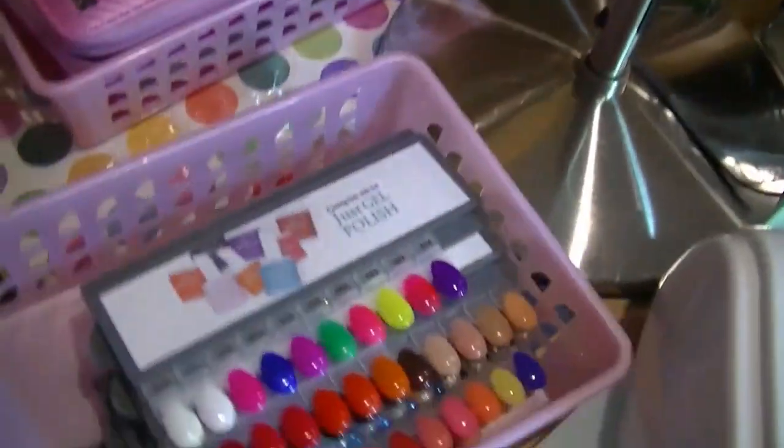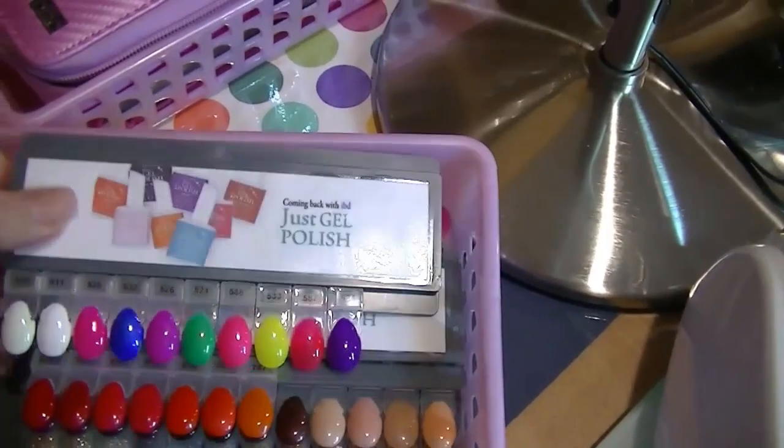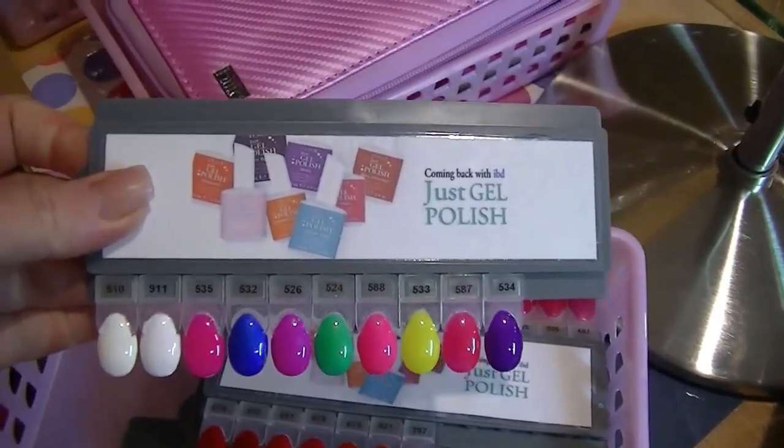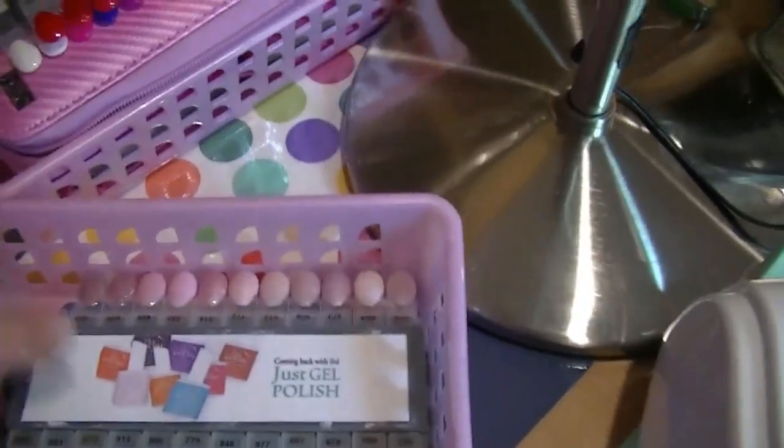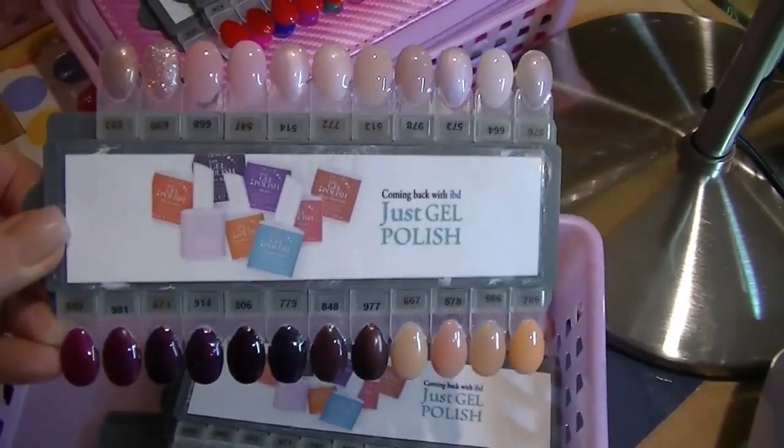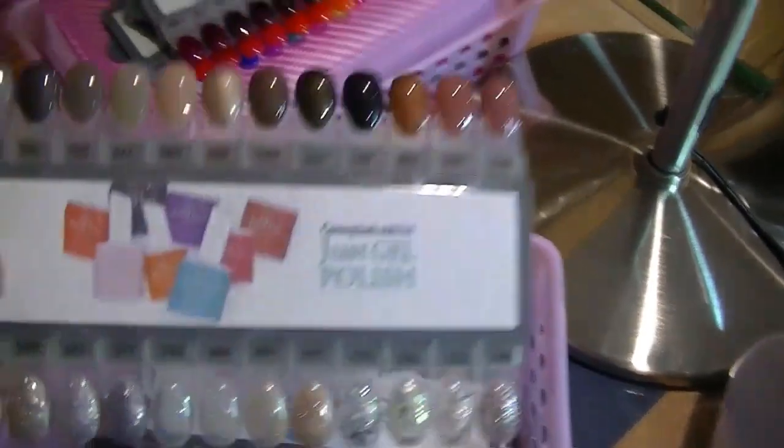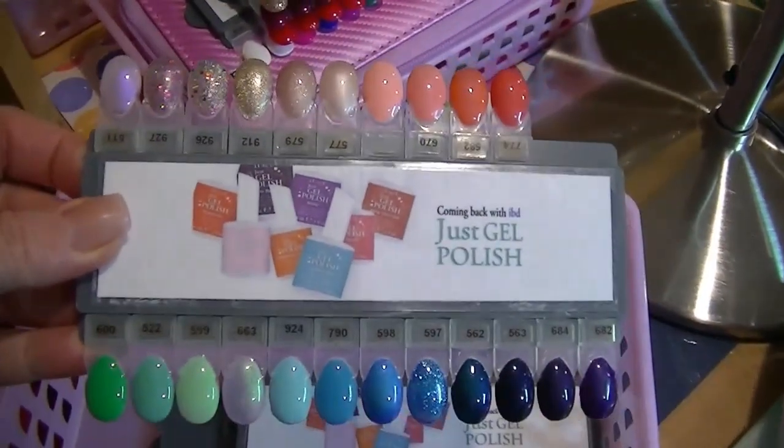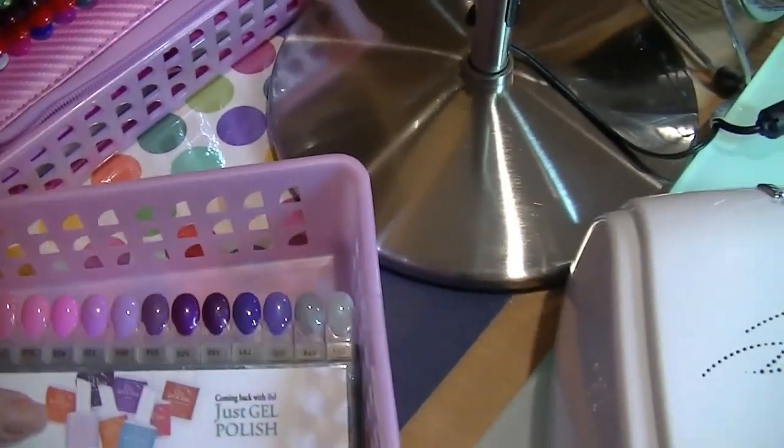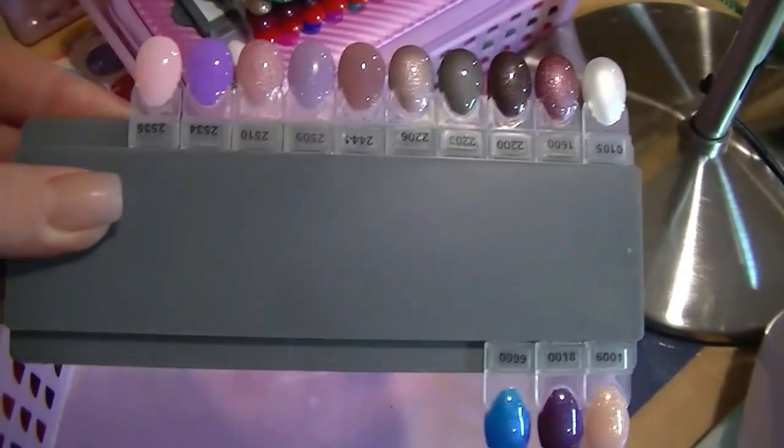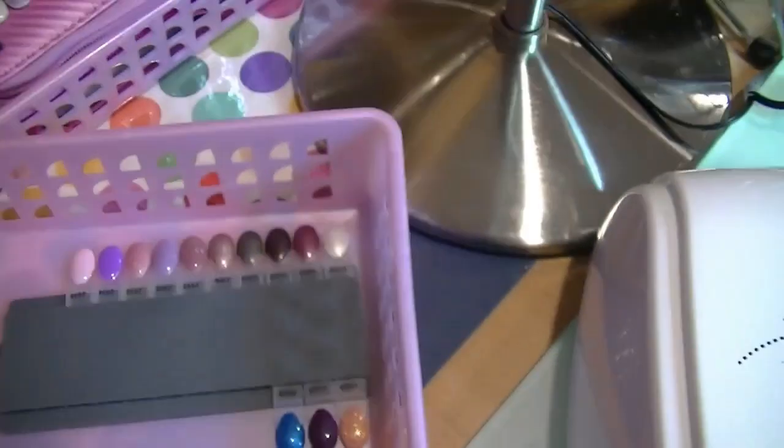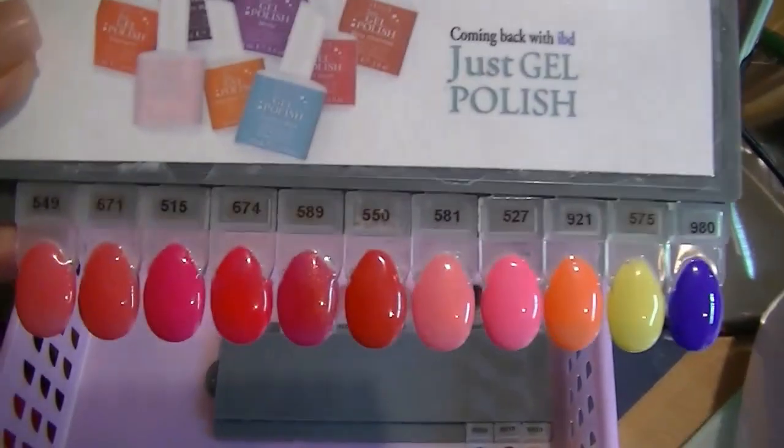These are my gel polish swatches. Each one of these nail tips was painted by myself, cured in the lamp, and then top coated and cured. You'll notice some clear tape with numbers on it. This is so that I can find the corresponding number on the bottles. You'll see later in the video where I keep my gel polishes, and these numbers just allow me to easily find the color that the client has selected.